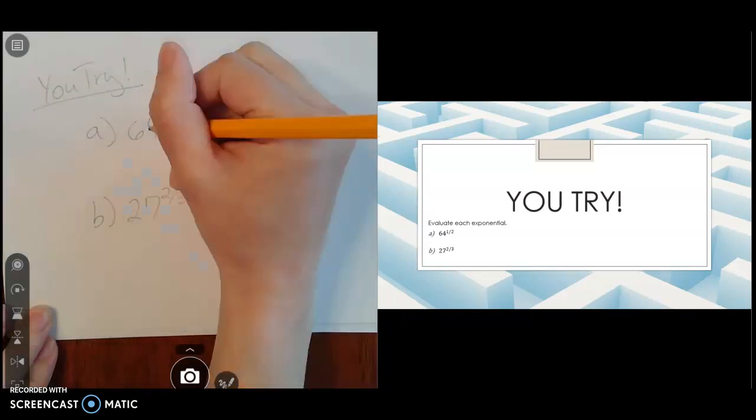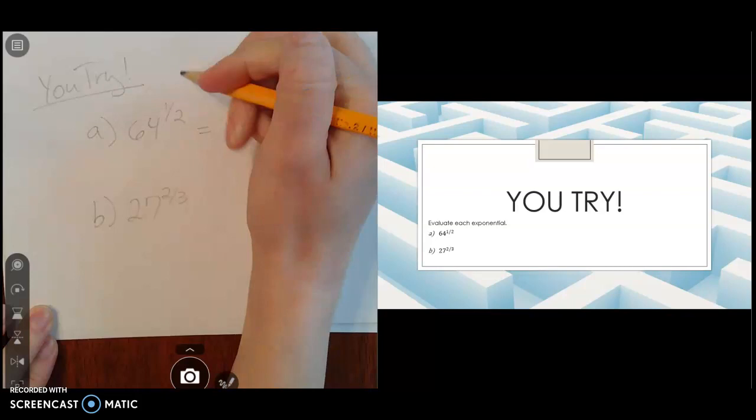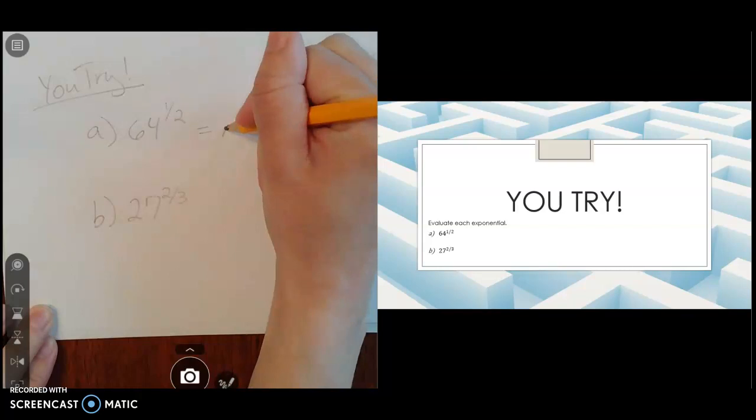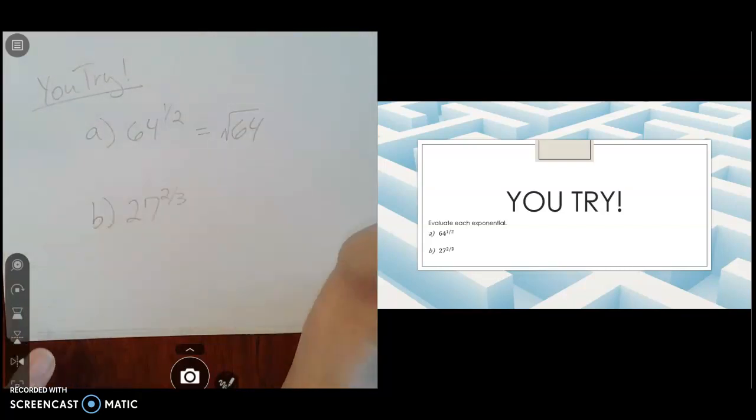So the first one I gave you was 64 raised to the one half power. The one half power means the exponent is one, and the type of root is a two root, so that's a square root. So we have the square root of 64 raised to the first power, so we're just doing the square root of 64.